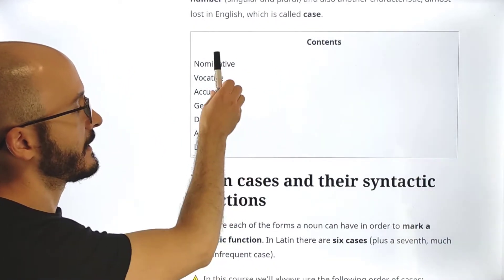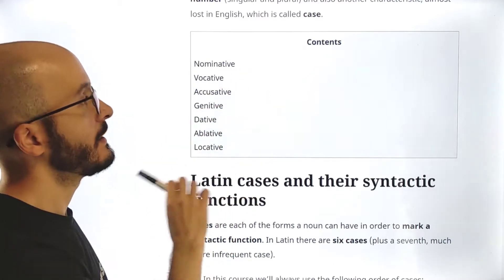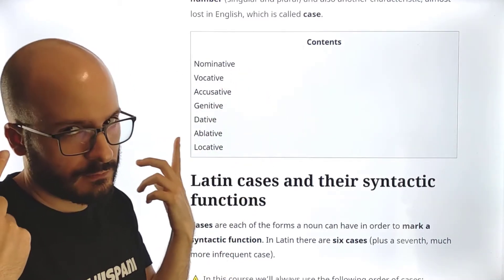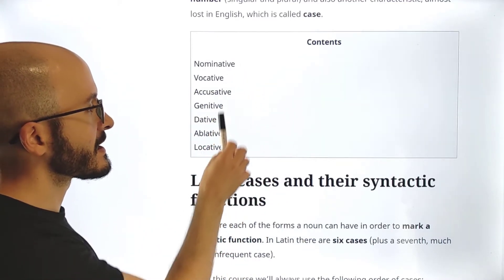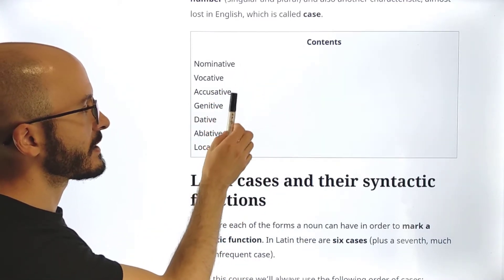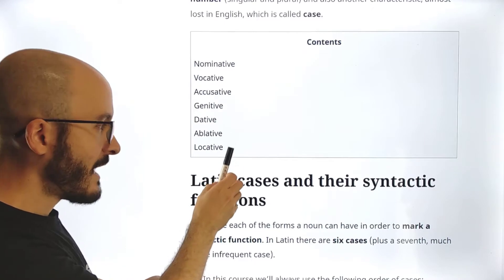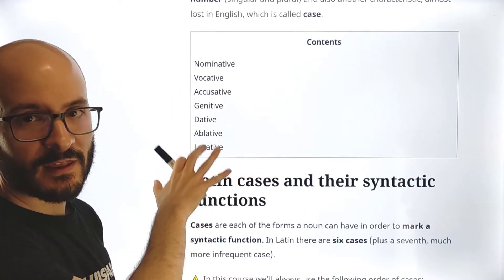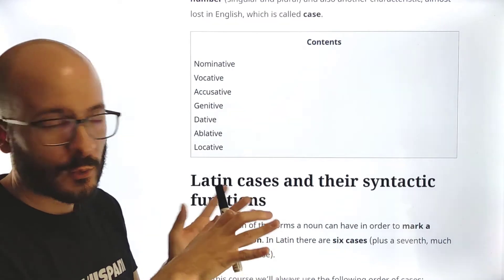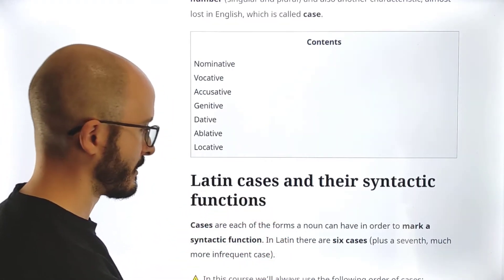But we have to focus on this case thing. And here we have the names of the cases. You should remember that we studied six cases: nominative, vocative, accusative, genitive, dative, ablative. And there is a seventh case. So we will introduce this seventh case.